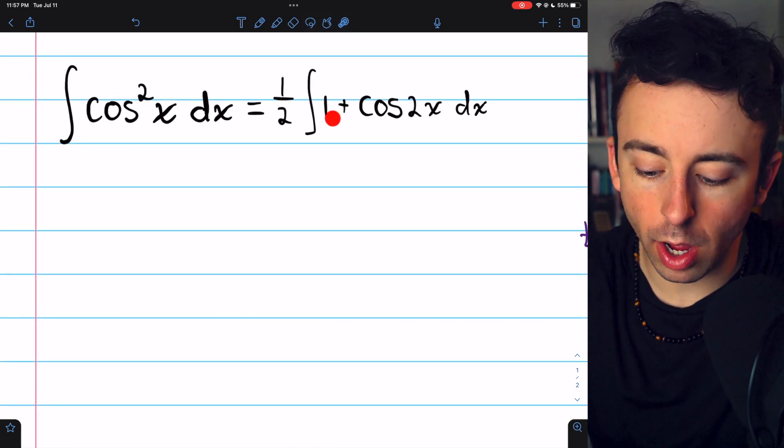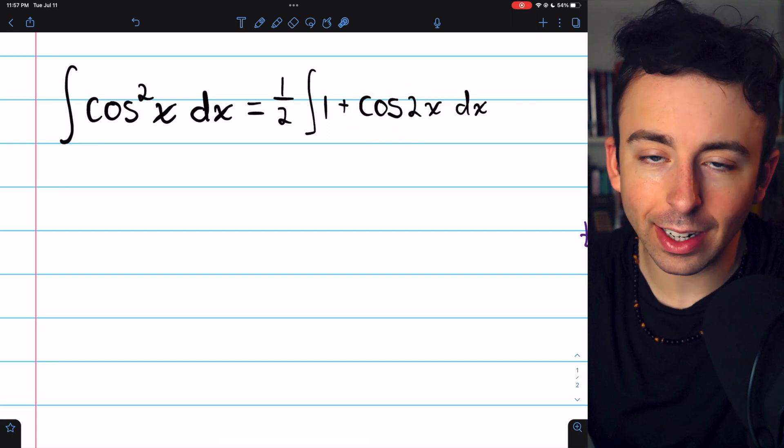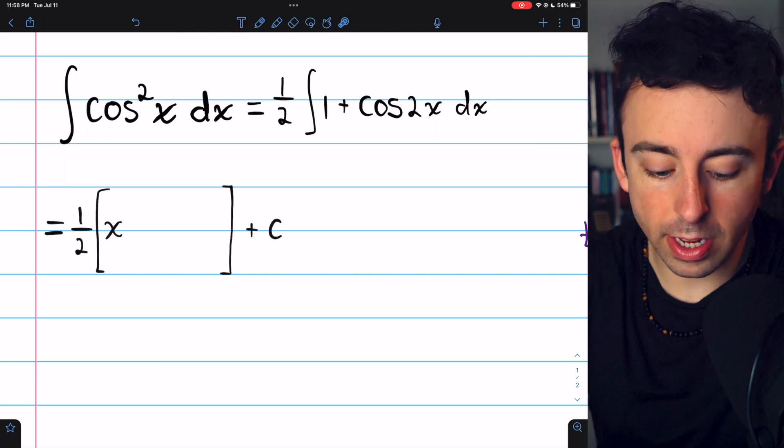Now we can integrate the 1, which is just x, and integrate cosine of 2x using u substitution or just thinking about it carefully.